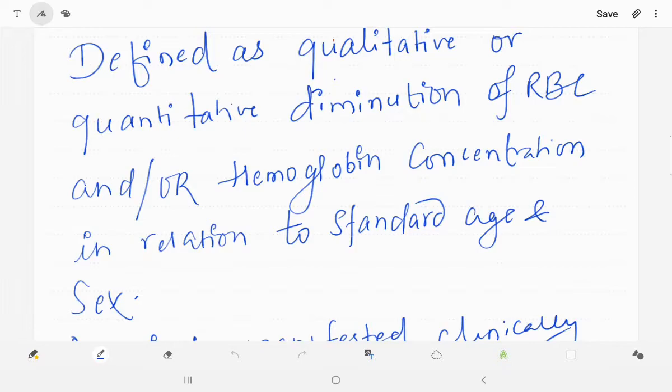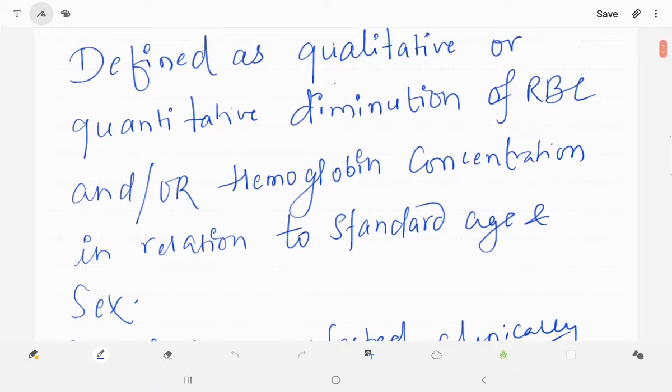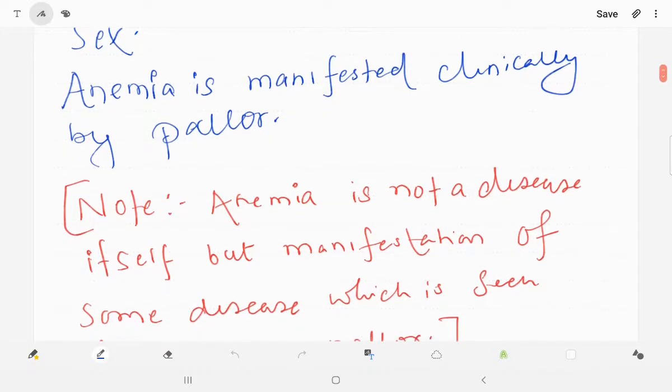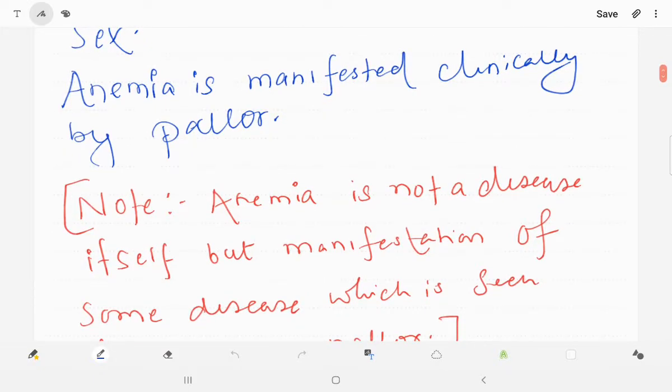Either hemoglobin level has to be low or due to its functional disorder it cannot bind with oxygen. And in relation to standard age and sex, because different age has different level of hemoglobin that is considered to be normal. So if that is below that, then only it is regarded as anemia.